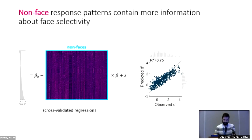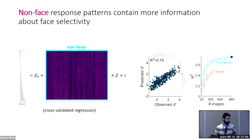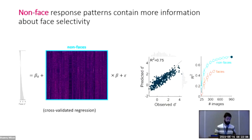In fact, non-face responses were more informative about face selectivity than face responses. When we tried the same prediction using only face responses, we couldn't do as well — and that was even the case when we equalized the number of images.